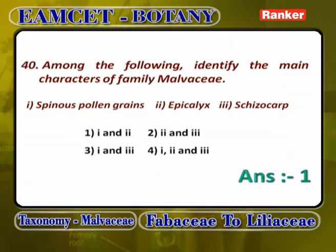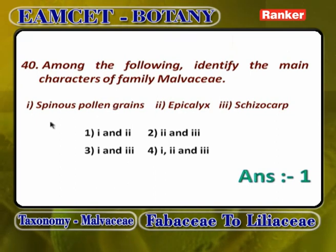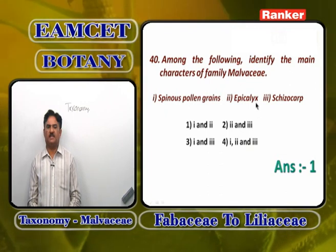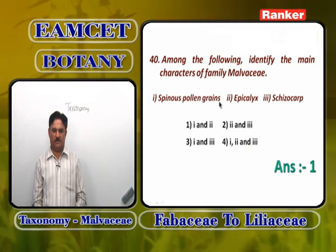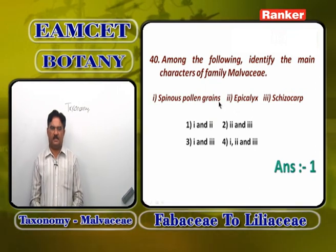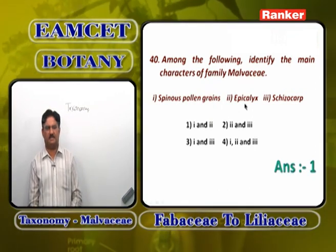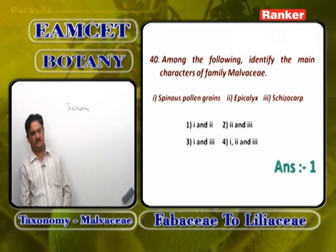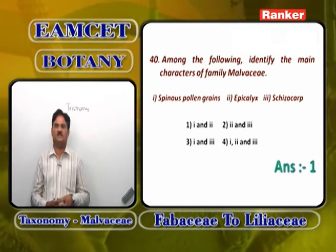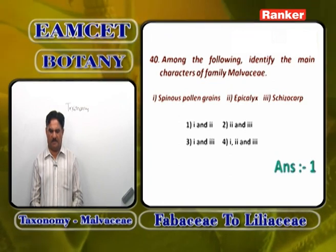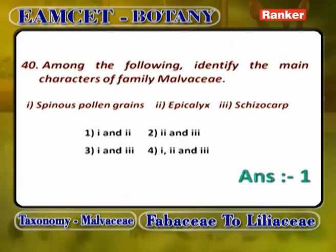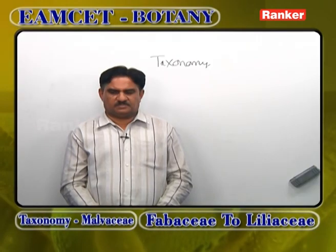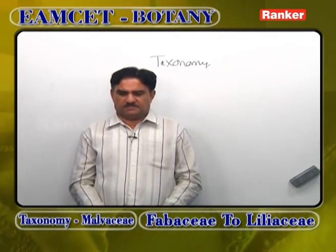Among the following, the main characters of the family Malvaceae are: spinous pollen grains, epicalyx, and schizocarp. Spinous pollen grains are found only in Malvaceae. Epicalyx is found in Malvaceae but with exceptions like Sida and Abutilon. Schizocarp is found only in Sida and Abutilon, not in all plants. Epicalyx is found in the majority, so the answer is spinous pollen grains and epicalyx.